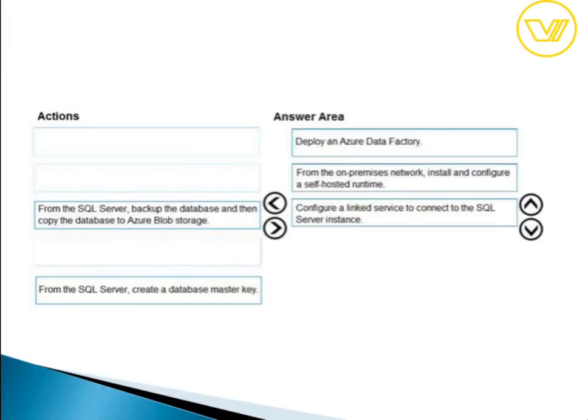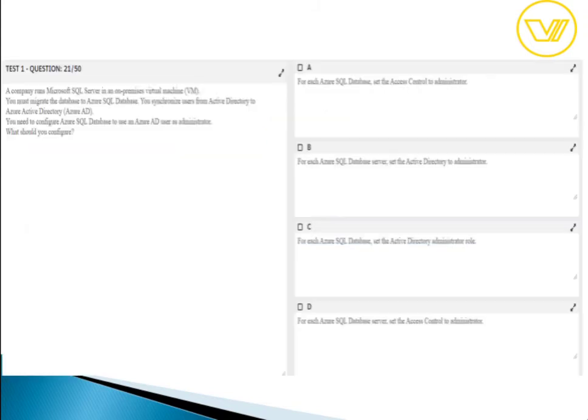For question twenty, the answers are: deploy Azure Data Factory from the on-premises network, install and configure the self-hosted integration runtime, then configure linked services to connect to the SQL Server instance. More terms like self-hosted runtime and integration runtime will be covered in the upcoming set two and set three videos.